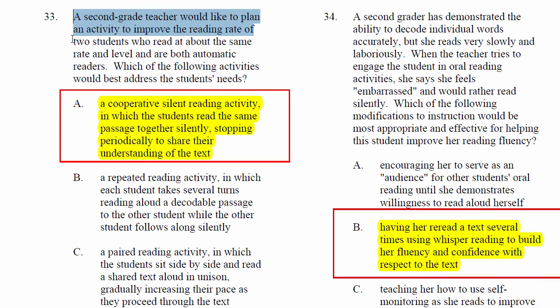A second-grade teacher would like to plan an activity to improve the reading rate of two students who read at about the same rate and level and are both automatic readers. Which of the following activities would best address the students' needs? This one is also a little challenging to figure out exactly what they're asking — that's why I've been going after the obvious questions first, because this one does take a little bit of thought.